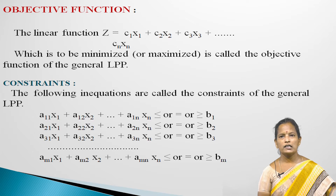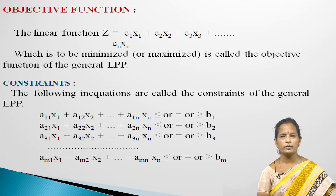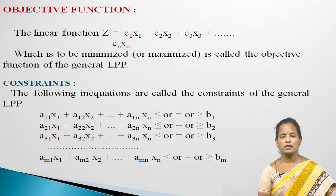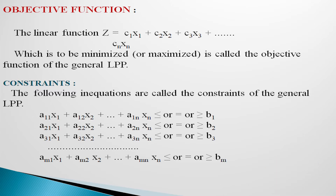Constraints: The following inequations are called the constraints of the general LPP: a11x1 plus a12x2 ... a1n xn less than or equal to, equal to, or greater than or equal to b1; a21x1 plus a22x2 ... a2n xn less than or equal to, equal to, or greater than or equal to b2; and similarly up to am1x1 plus am2x2 ... amn xn less than or equal to, equal to, or greater than or equal to bm.